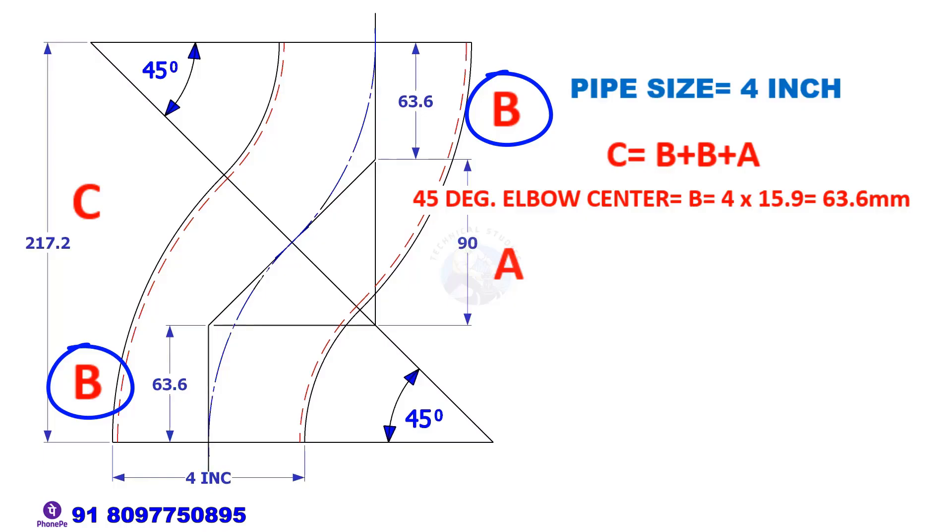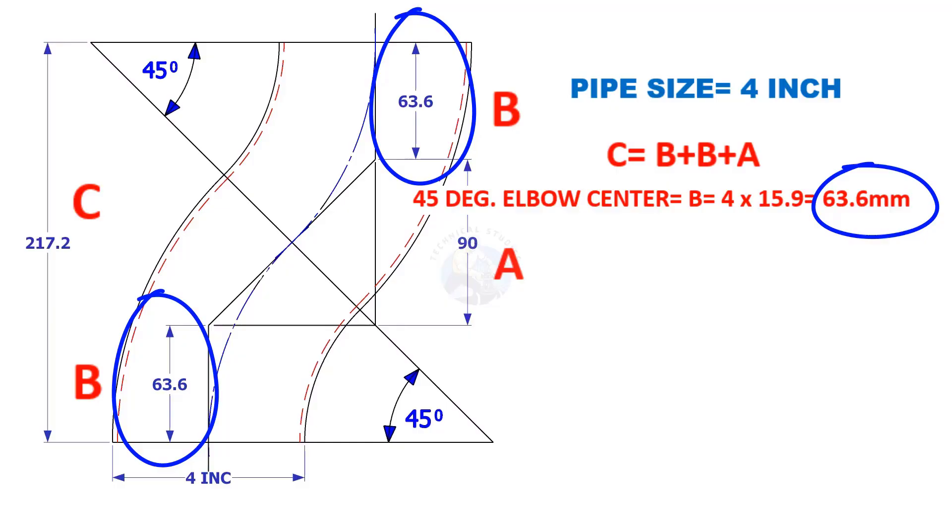Elbow center B is 4 inch multiplied by 15.9. 15.9 is constant. So the value of B equals 63.6 millimeters.